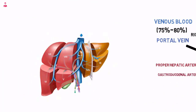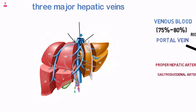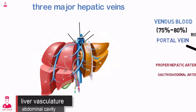The venous drainage of the liver occurs via the small interlobar and intersegmental hepatic vessels that merge into the three major hepatic veins, emptying directly into the IVC just below the diaphragm.